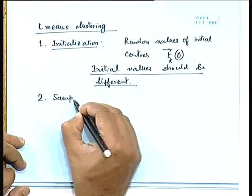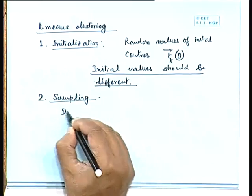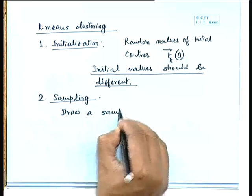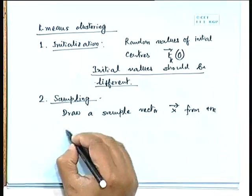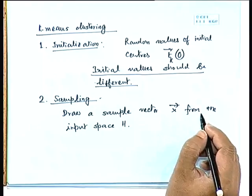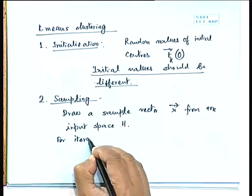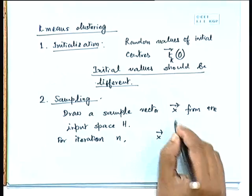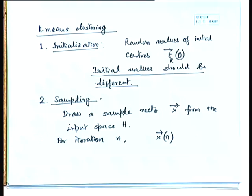The second step is sampling: we draw a sample vector x from the input space H. For iteration n, the sample drawn is written as x(n), meaning in the nth iteration we have picked up the sample vector x. We pick a sample vector from the input space for every iteration. The third step is computation of distance, or similarity matching: we determine the index of the winning center. We denote this as k(x), a function of x, because the index of the winning RBF position depends on the input — feeding a different input can give a different winning center.